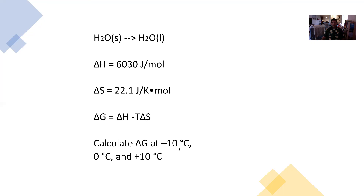At negative 10 degrees Celsius, you should calculate a delta G of about 217.7 — a positive number, meaning this is not a spontaneous process and not thermodynamically favored. At zero degrees Celsius, you should get a delta G of zero, which happens when these processes are at equilibrium — we'll talk more about that. At positive 10 degrees Celsius, you should get a number around negative 224.3 — a negative number, meaning at positive 10 degrees this process is spontaneous and thermodynamically favored.